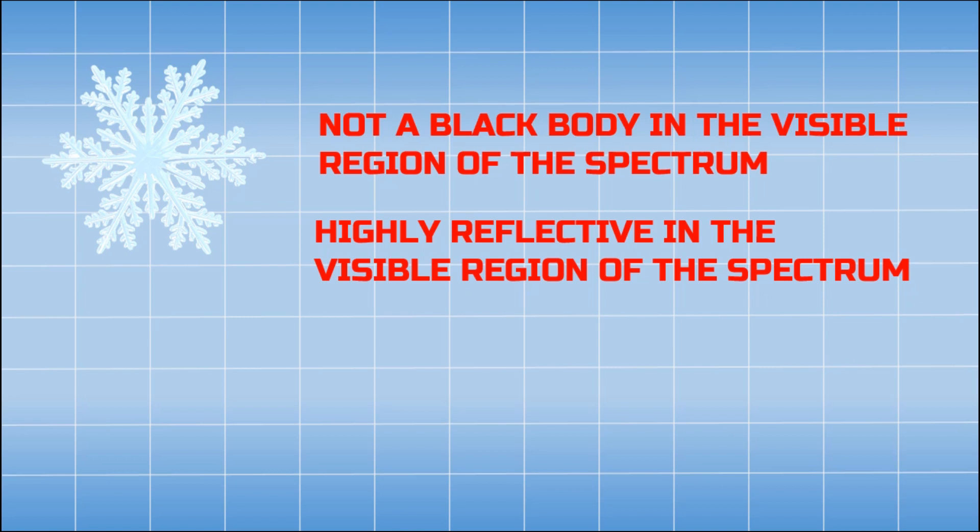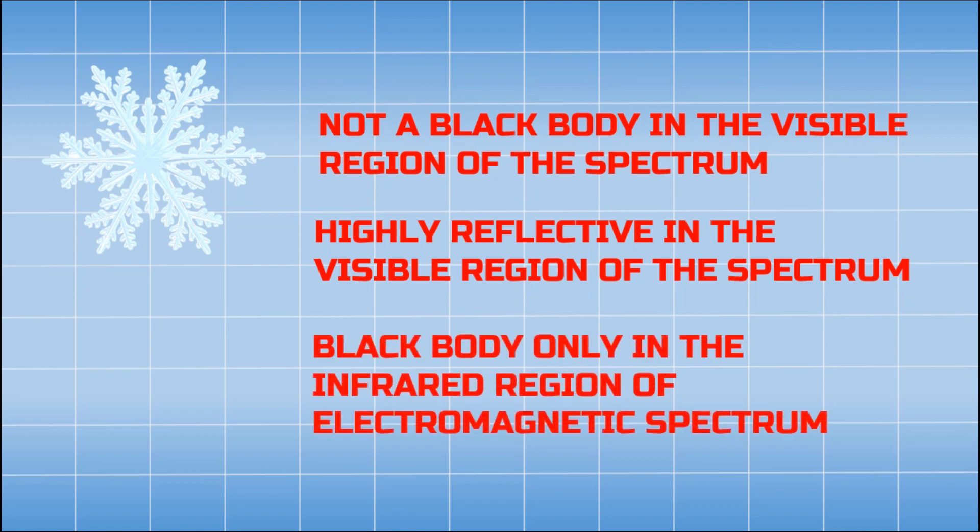But in the infrared region of the spectrum it absorbs and emits nearly all the radiation and therefore it is a black body only in the infrared region. And since black body concept is related to thermal radiation and the heat is generated due to infrared region of the spectrum, we can say that snow is also a black body.